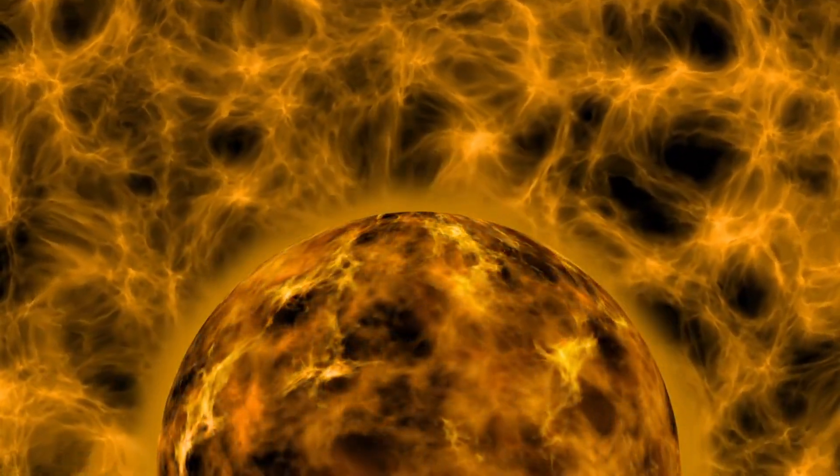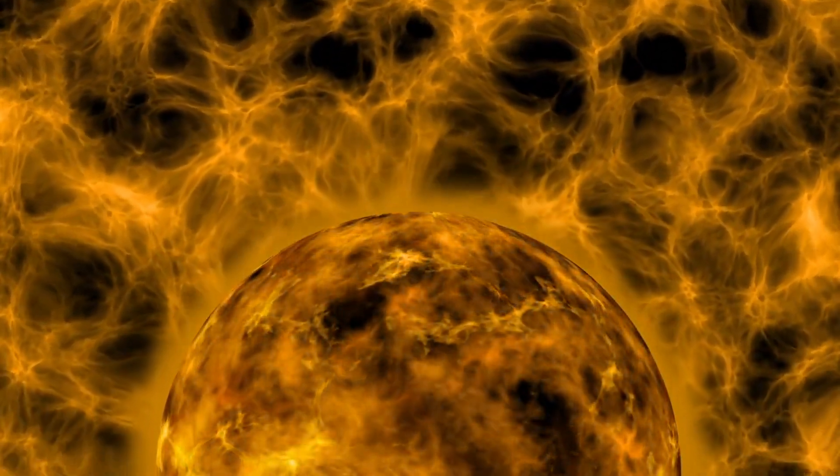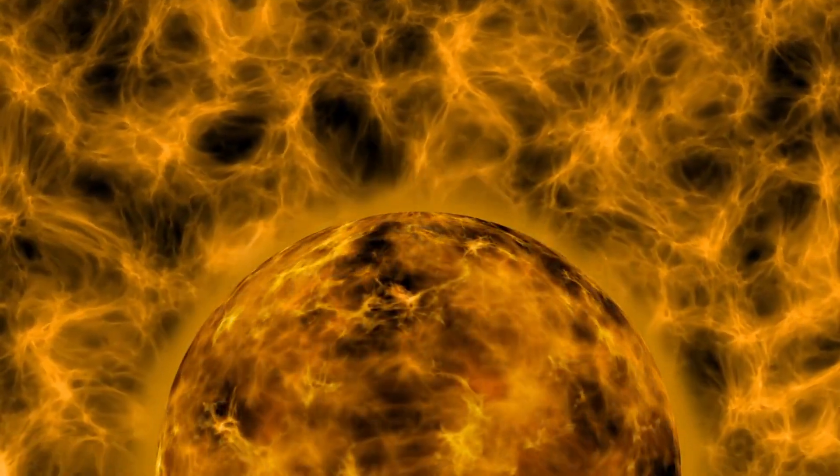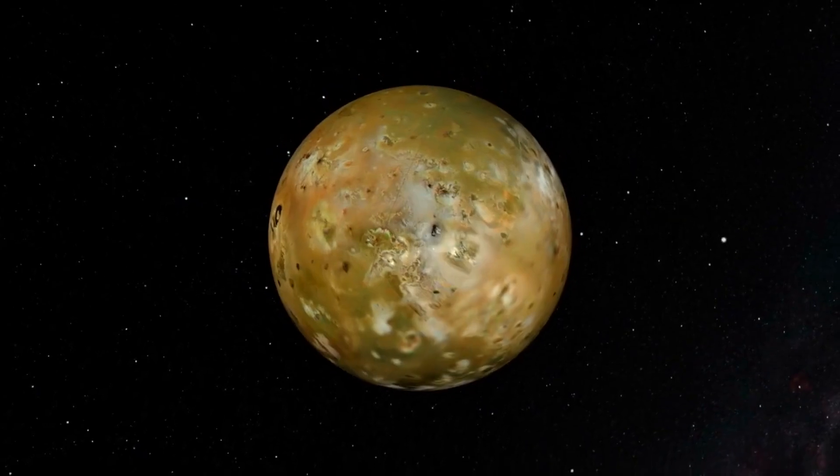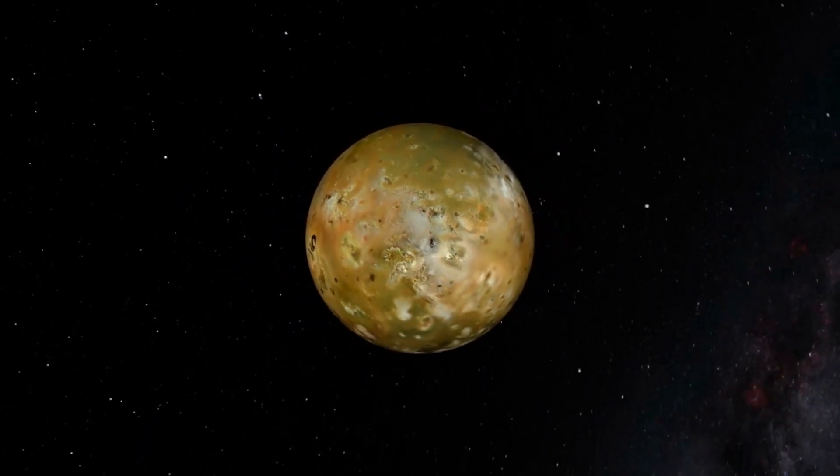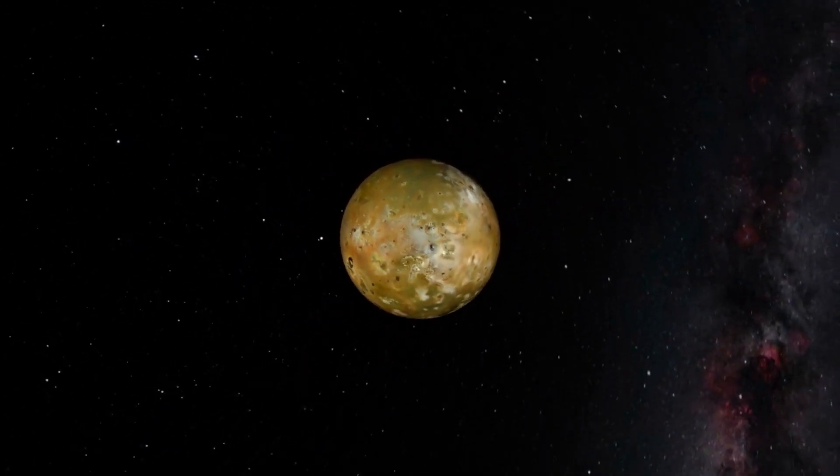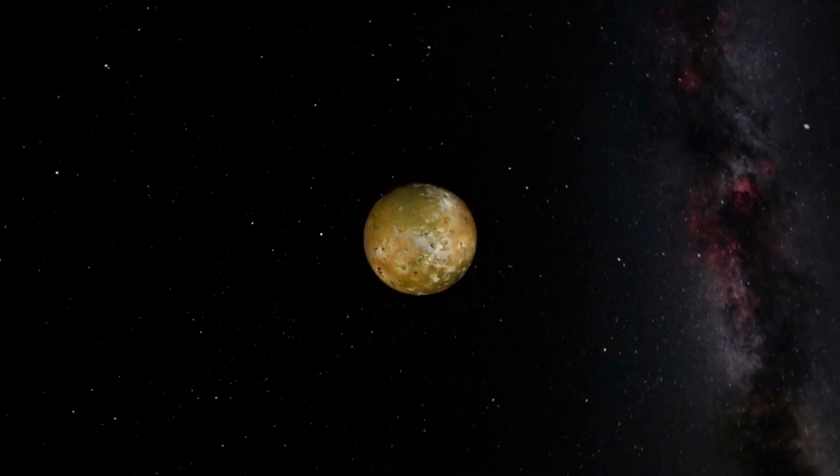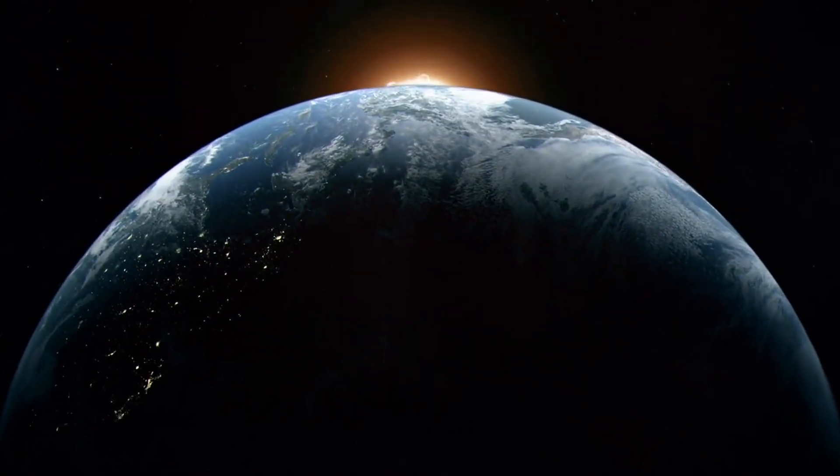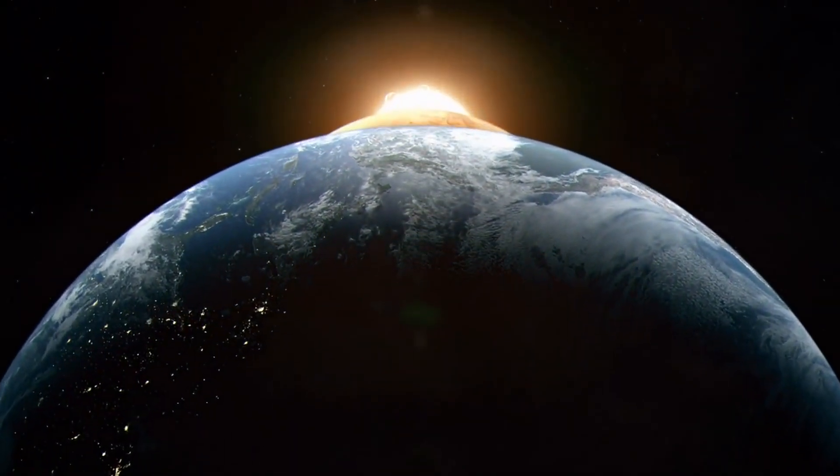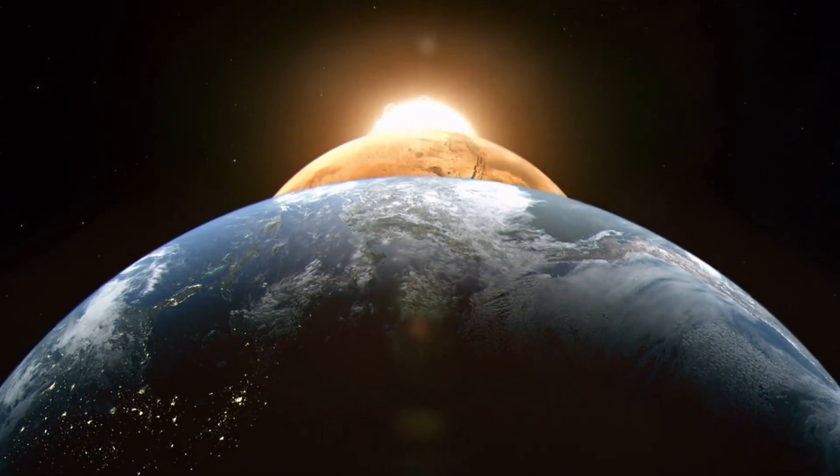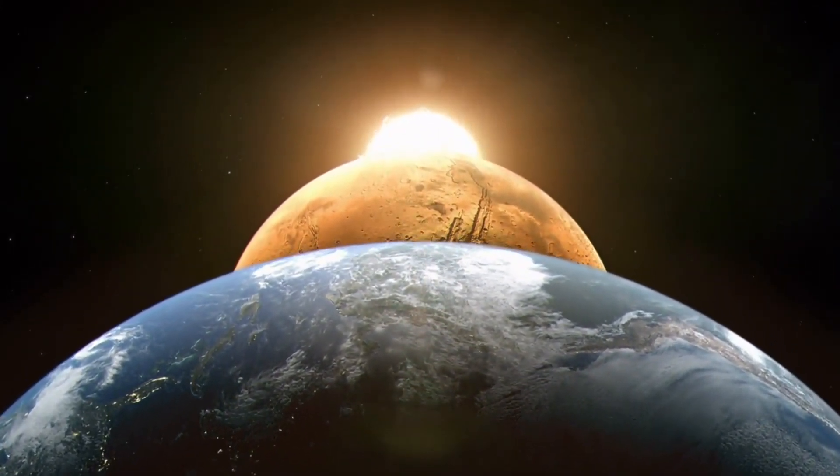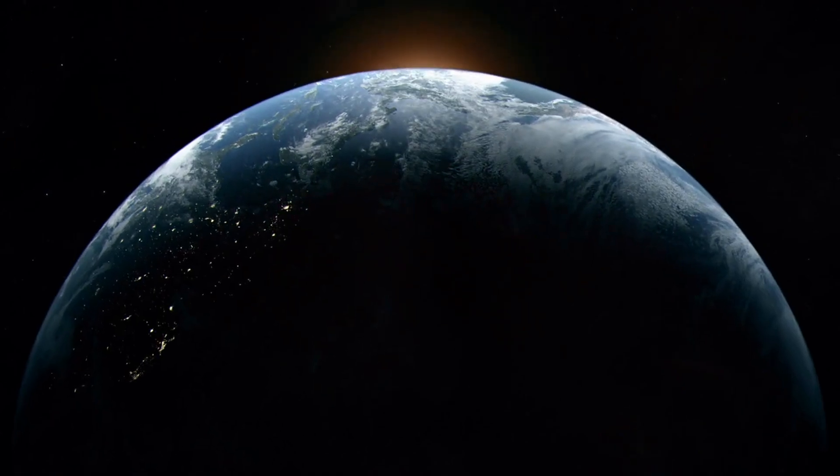But there's an even more dramatic consequence. The collision could cause the inner solar system's delicate balance to unravel. The gravitational interactions between the remaining planets, moons, and debris could lead to a destabilization of orbits. In the worst case scenario, Mars and even Earth could be flung into unstable trajectories, causing unpredictable and dangerous shifts in the orbits of all the inner planets.